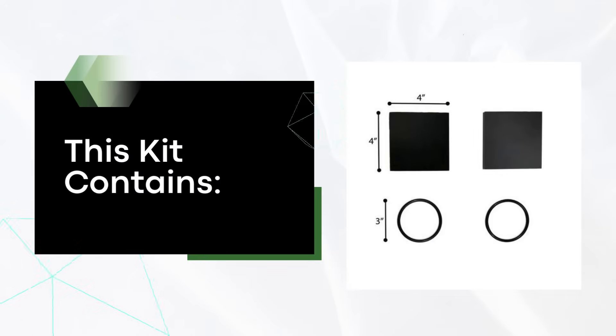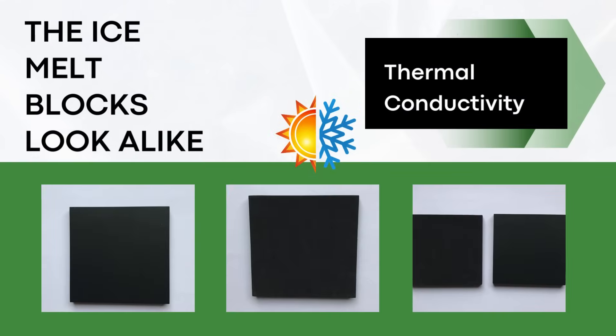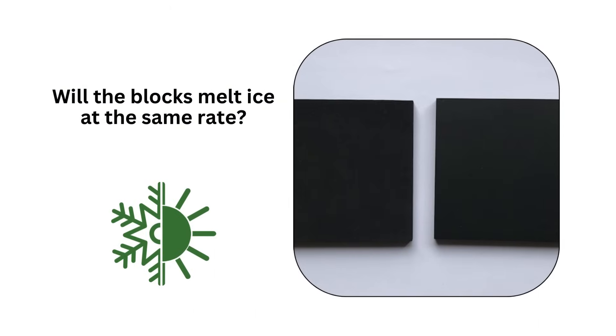The ice melt blocks kit contains one block made of aluminum, one block made of high-density foam, and two o-rings. The ice melt blocks look the same. Will the blocks melt ice at the same rate?